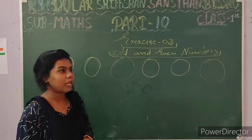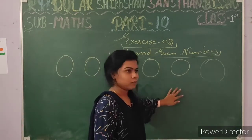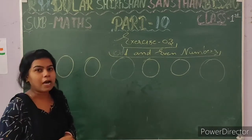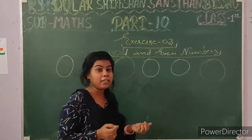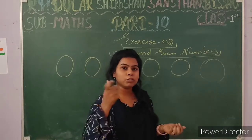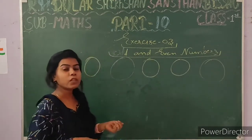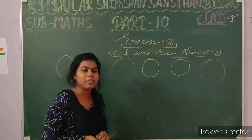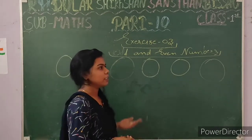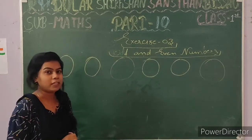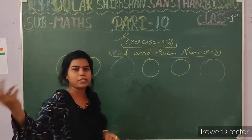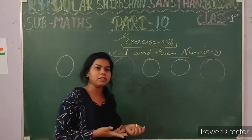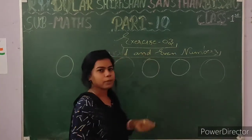I will tell you that even numbers are those numbers which are divisible by 2. I also told you a short trick to recognize them: if the ones digit of any number is 0, 2, 4, 6, or 8, then we say that number is an even number.